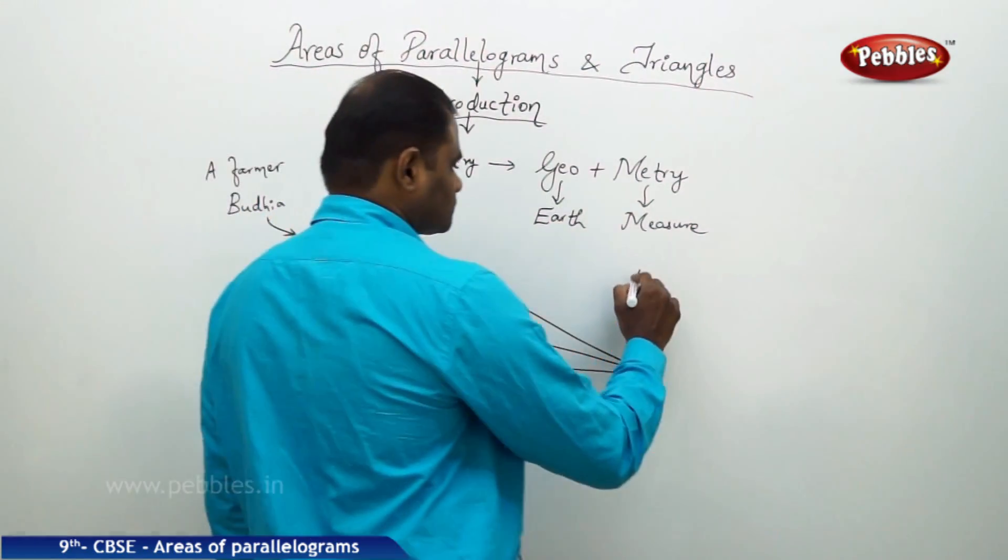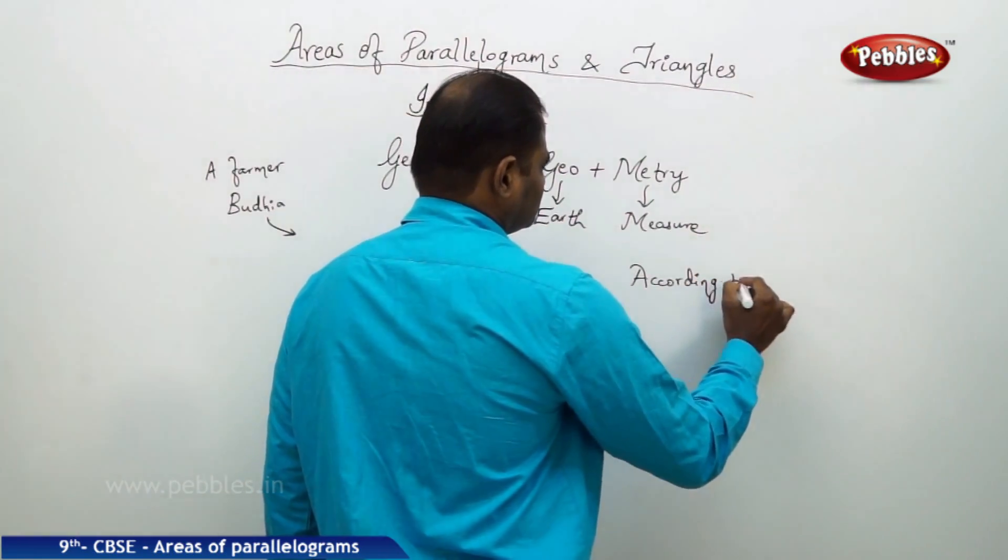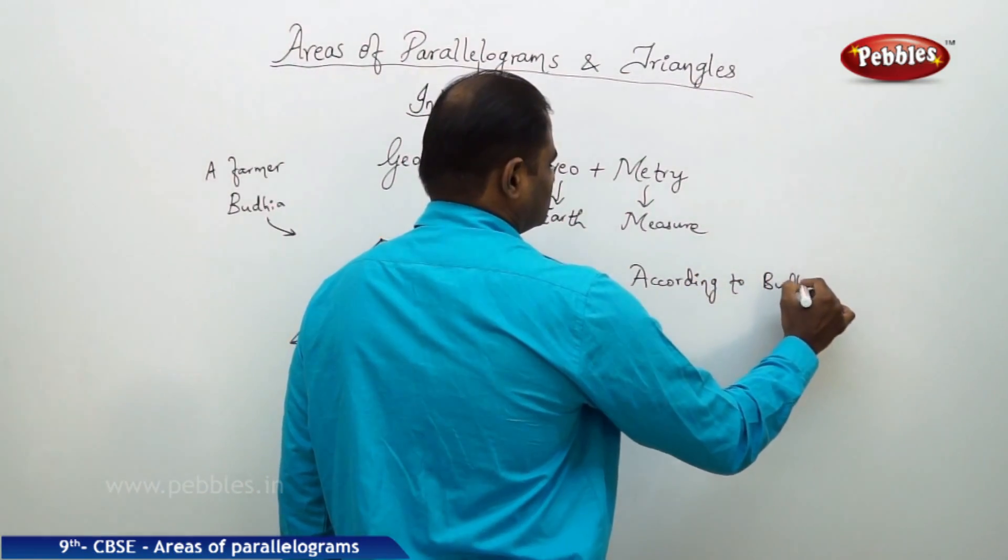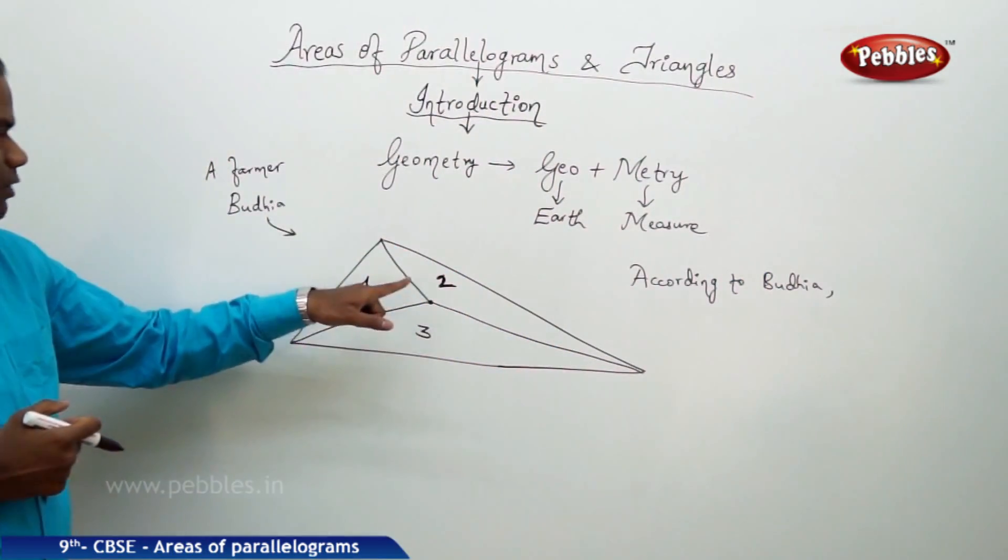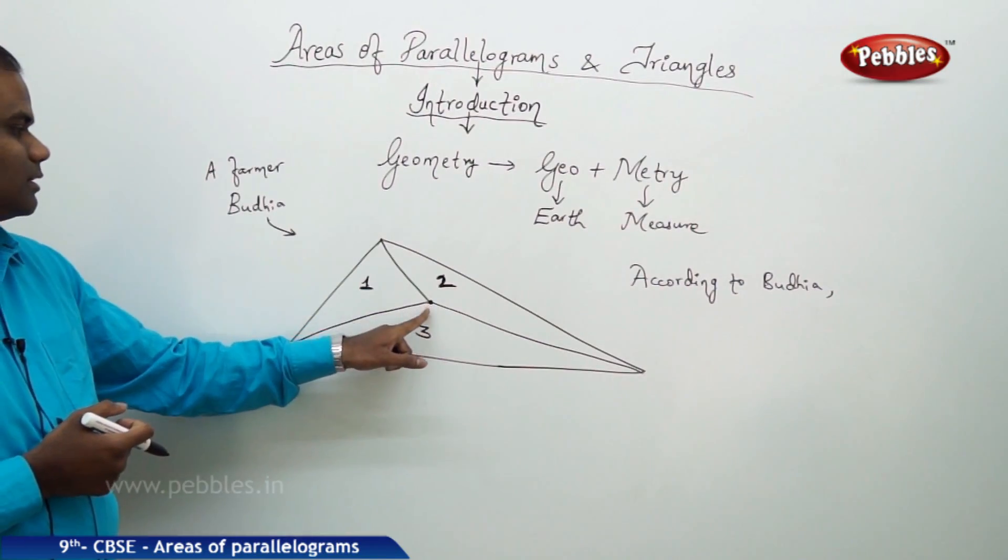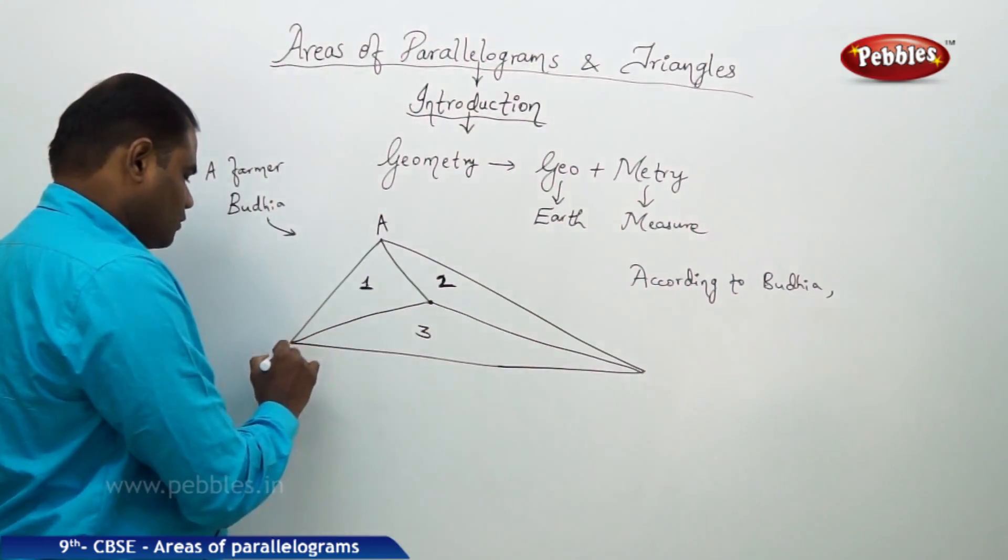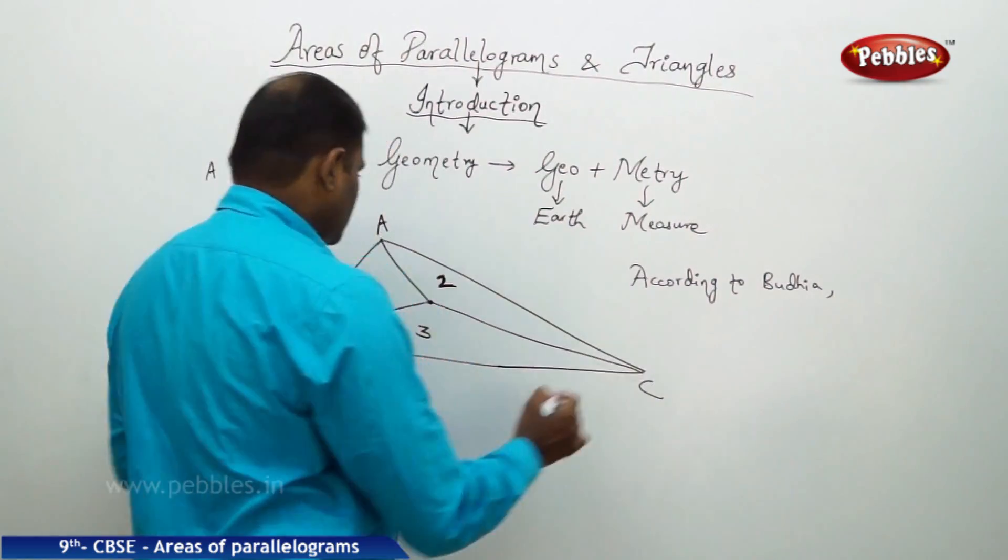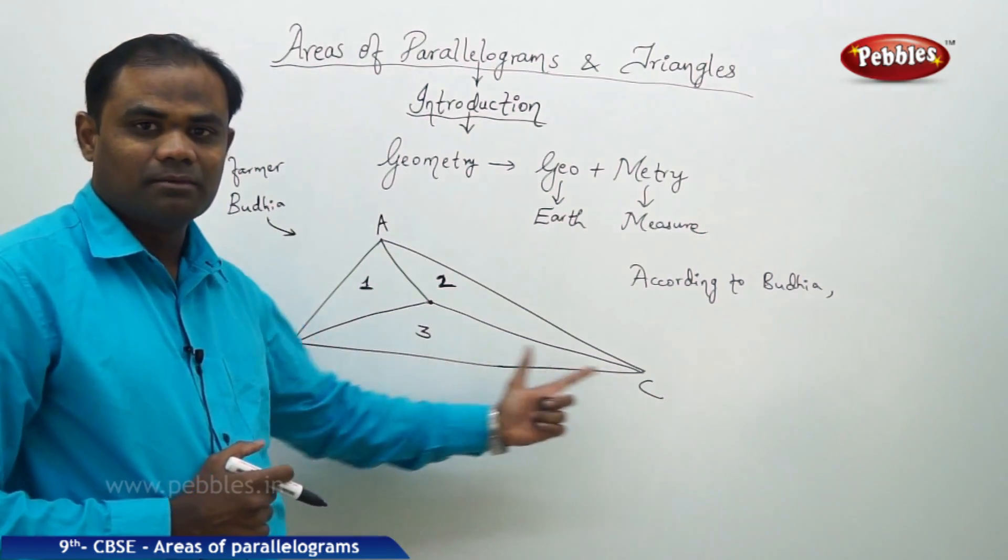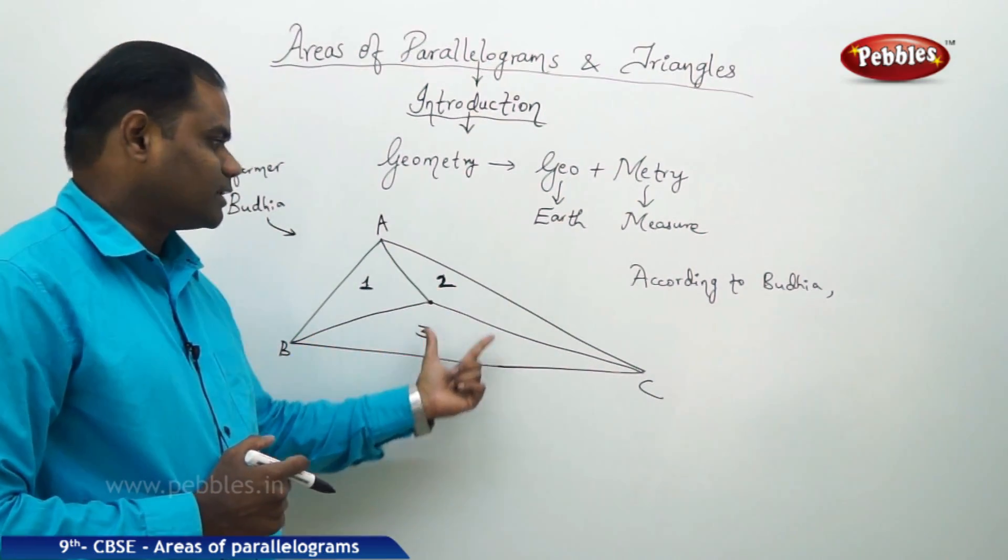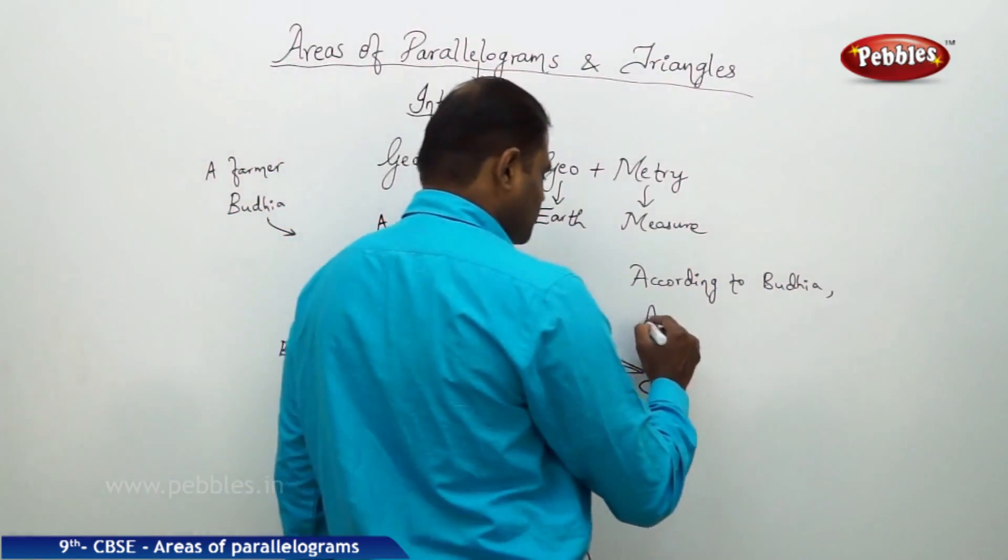According to Budiya, his estimation is that from the center of this, approximately, the cutting of the land to each of the vertices of his agricultural land ABC are assumed to divide the whole triangular piece of land into three parts: first, second, and third. According to Budiya, area of the first piece...